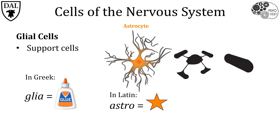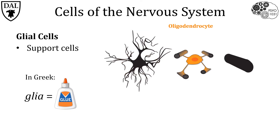Astrocytes also regulate extracellular neurotransmitter levels, which are essential for signaling. Oligodendrocytes are another type of glia cell, though their function is more limited than astrocytes. They make myelin, a fatty substance that wraps around and insulates a part of the neuron called the axon. Oligodendrocytes are the main myelinating glial type in the central nervous system — so the brain and the spinal cord.